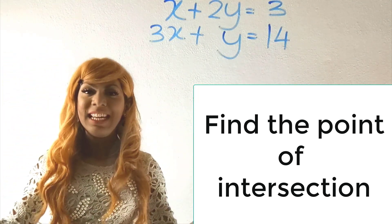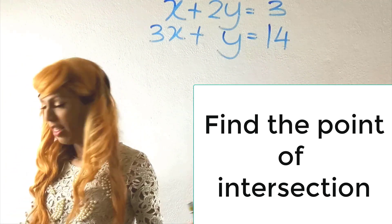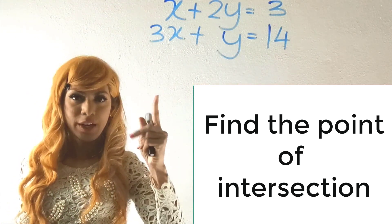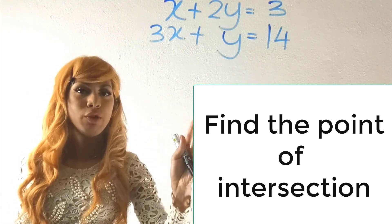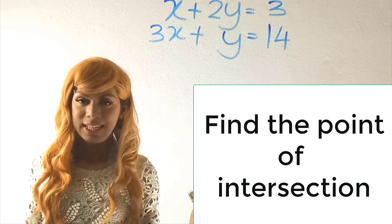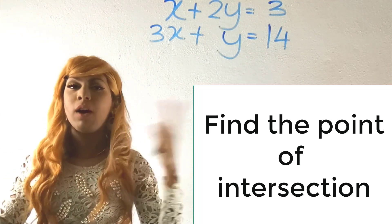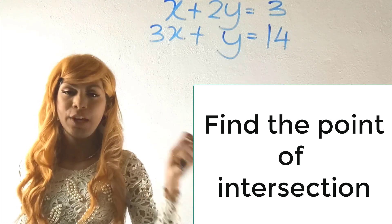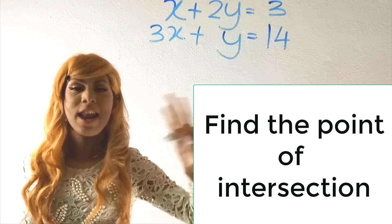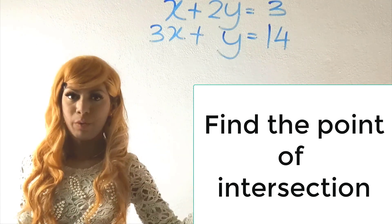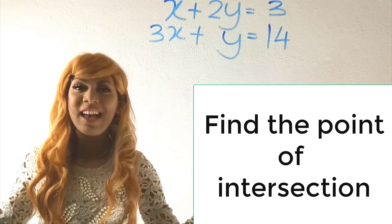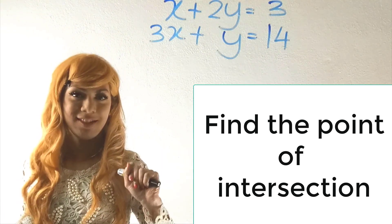We are at the 11th and final section: point of intersection. Given two straight line equations, to find their point of intersection, solve them as a simultaneous equation to get the x and y values. Write the result as a coordinate pair — that is your point of intersection.